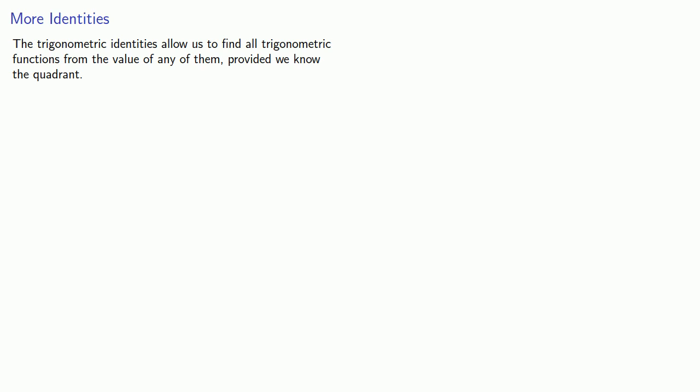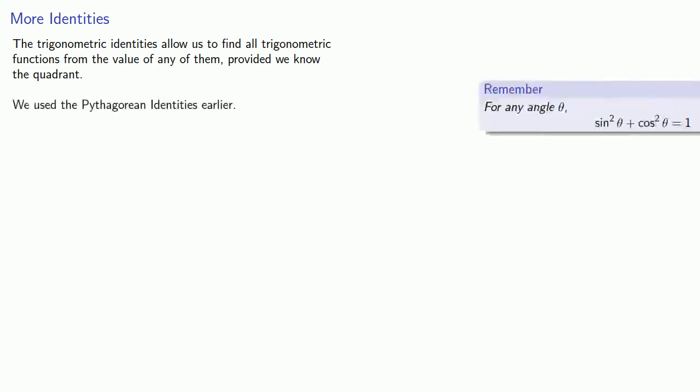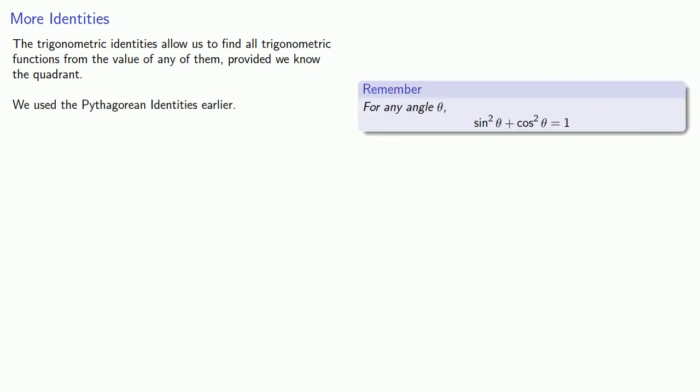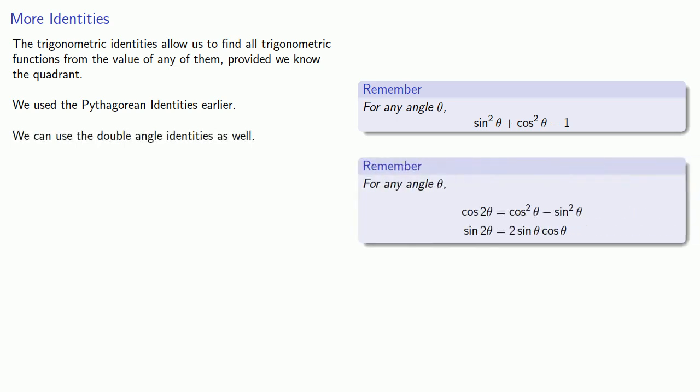The trigonometric identities allow us to find all trigonometric functions from the value of any one of them, provided we know the quadrant. We used the Pythagorean identities earlier, and we can use the double angle identities as well.